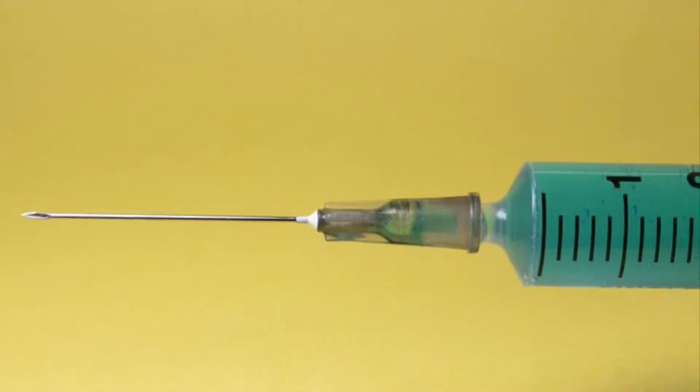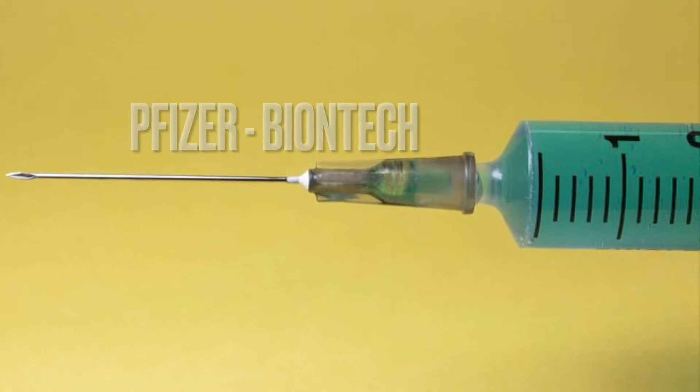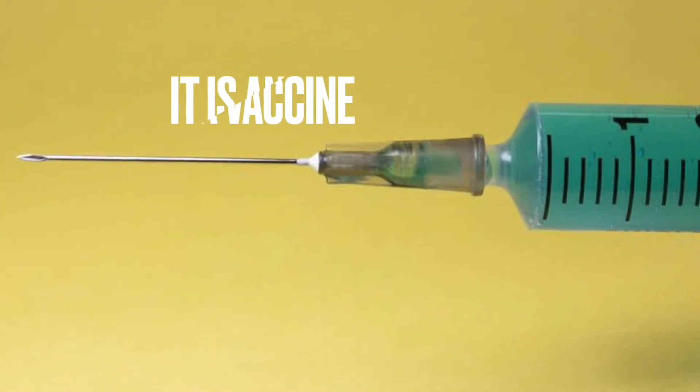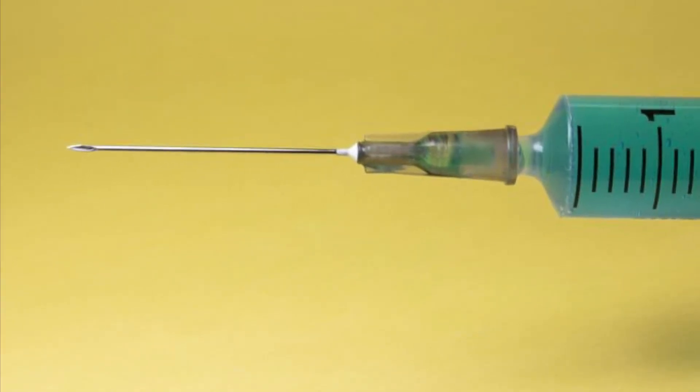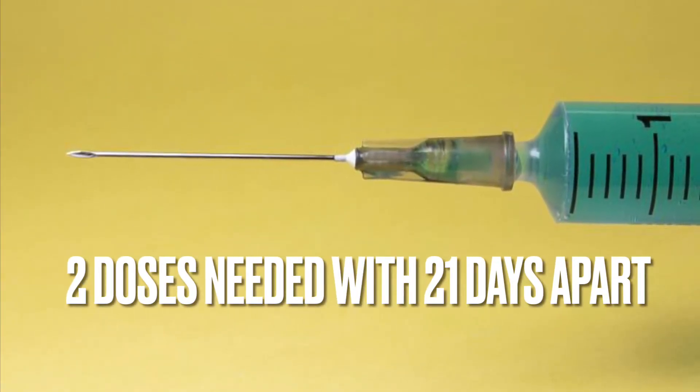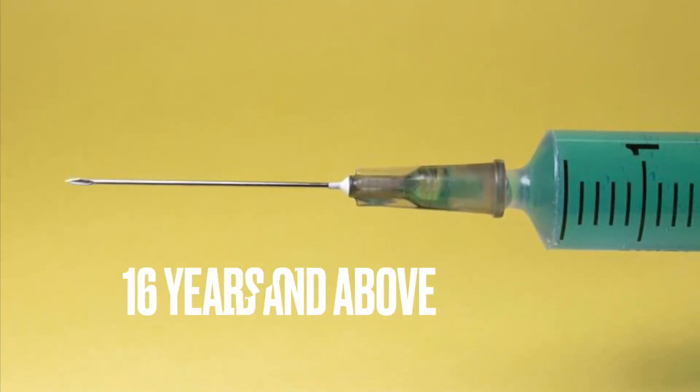The first vaccine is the Pfizer-BioNTech vaccine. Pfizer vaccine is 95% effective and is an mRNA vaccine that prevents COVID illness. Two doses are needed with 21 days apart, and people aged 16 and older can get the vaccine.